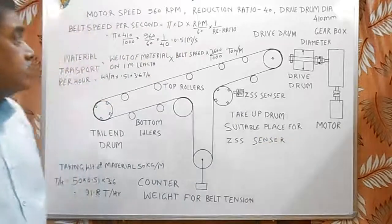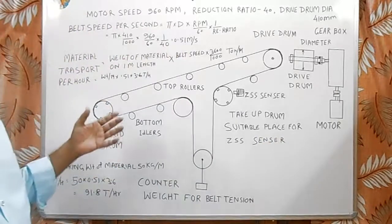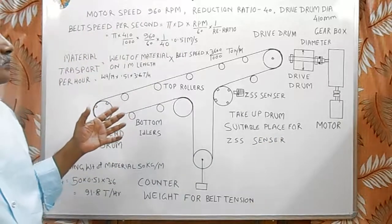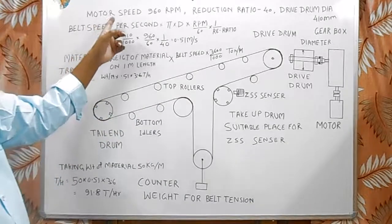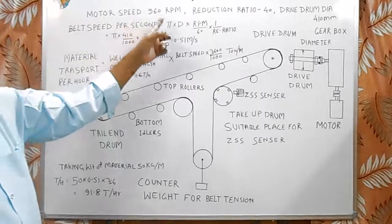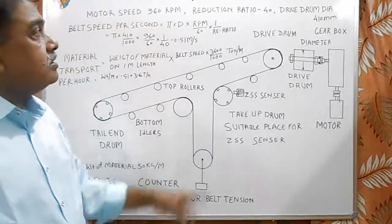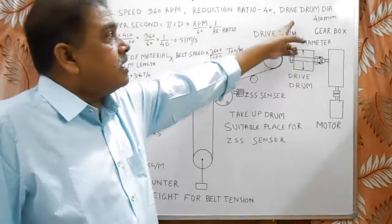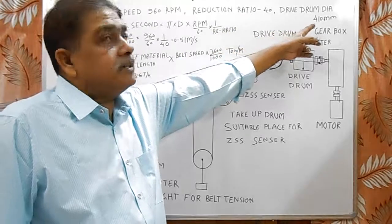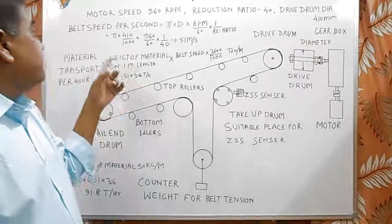For calculation of material handling per ton per hour, we need to have these things. First one motor speed that is 960 rpm in this case. Reduction ratio of gearbox that is 40. And drive drum diameter here it is 410 millimeters.